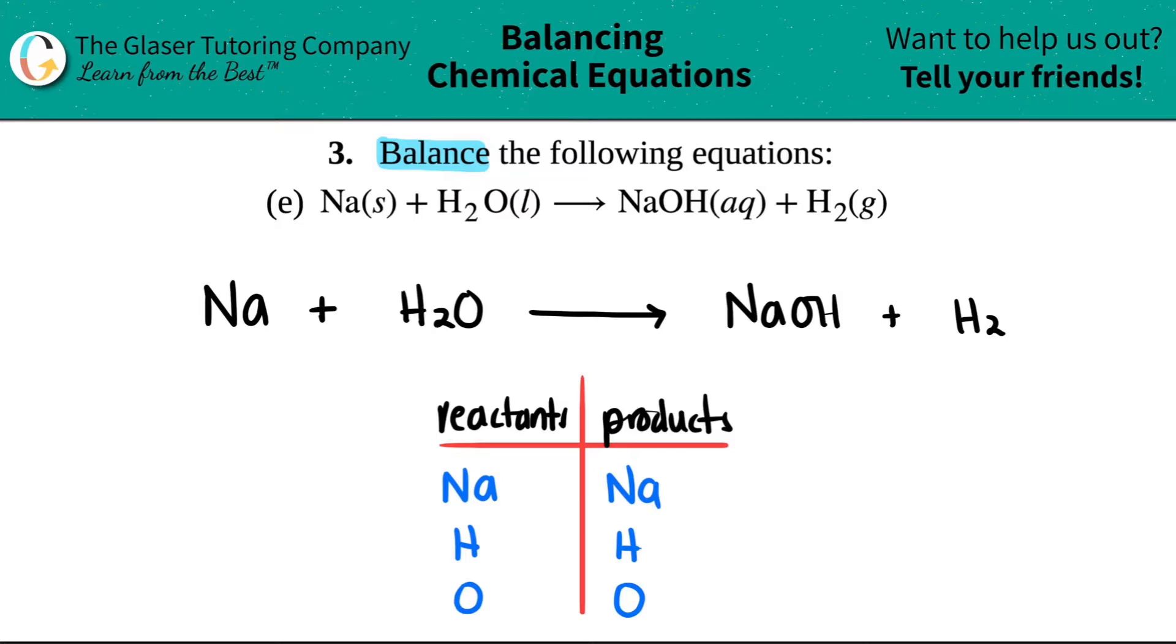Now I'm just going to tally up how many I have of each. I go back, I like to just start with the reactant side. So it just says sodium, it just says Na, that means that I have only one of them, so I have one sodium.